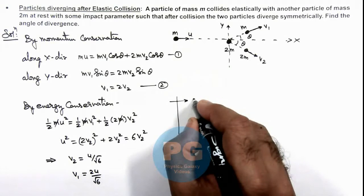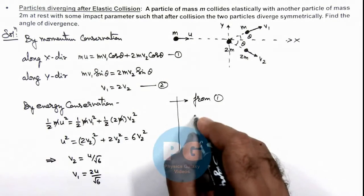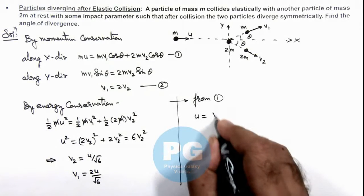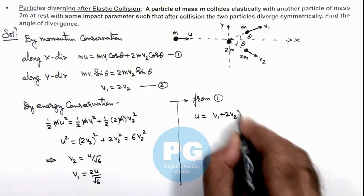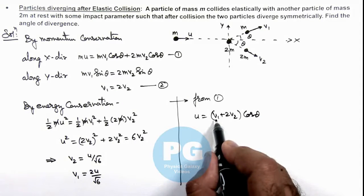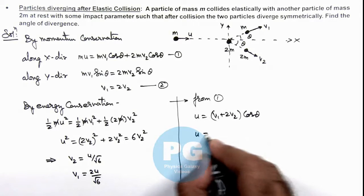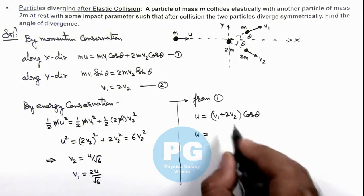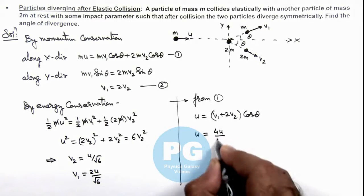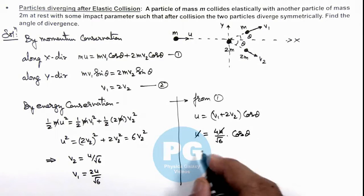By using equation 1 we can write, from equation 1 we'll have u equals v1 plus 2v2 times cos theta. So if we substitute the values of v1 and v2 here, you can see this gives us u equals 2u/√6 plus 2u/√6, this is 4u/√6 times cos theta. Here u gets cancelled out and the value of cos theta we are getting is equal to √6/4.